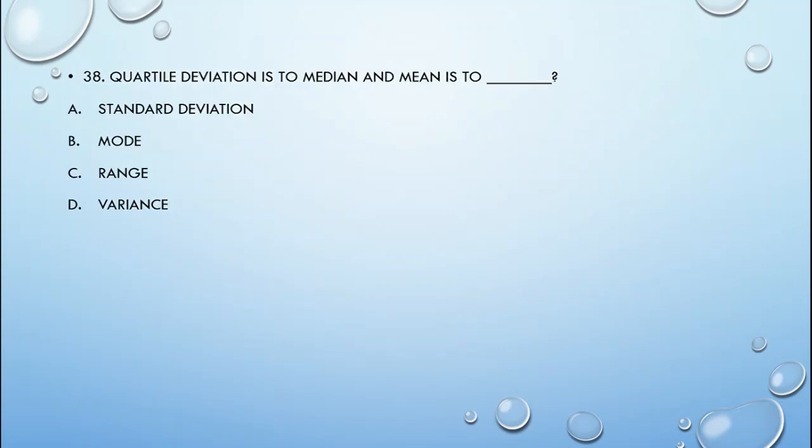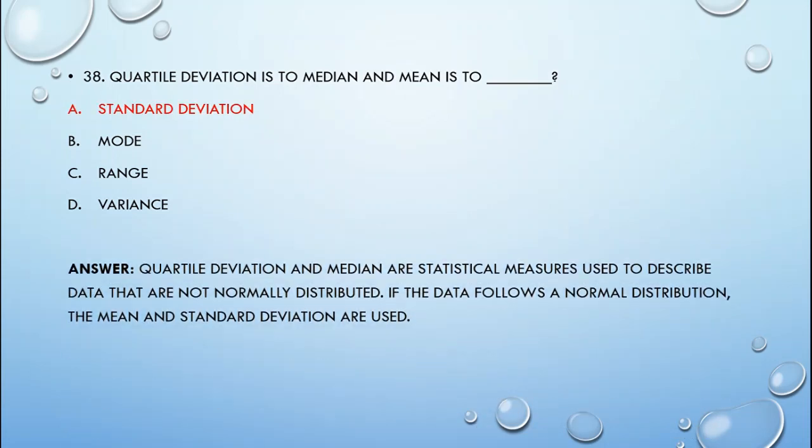Number 38. Quartile deviation is to median and mean is to blank. Quartile deviation and median are statistical measures used to describe data that are not normally distributed. If the data follows a normal distribution, the mean and standard deviation are usually used.